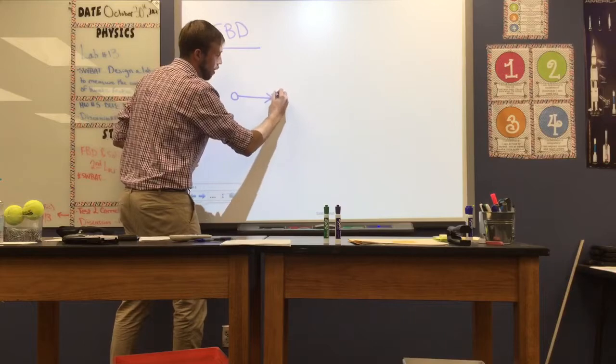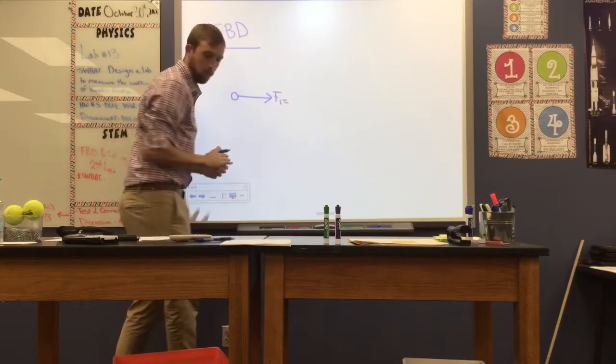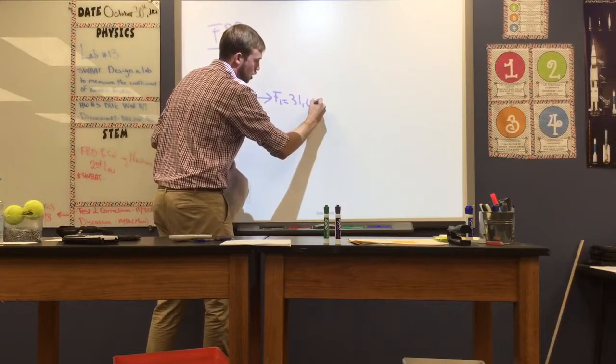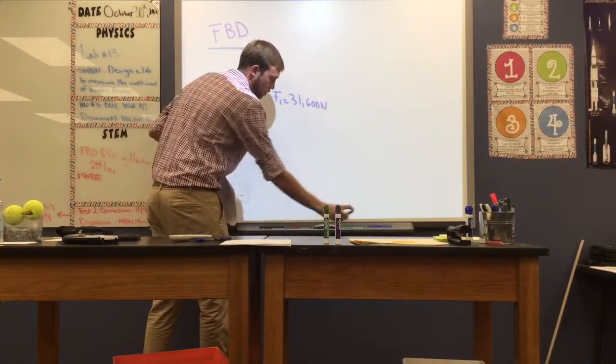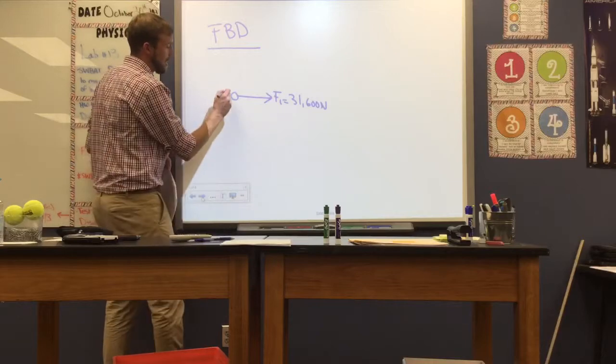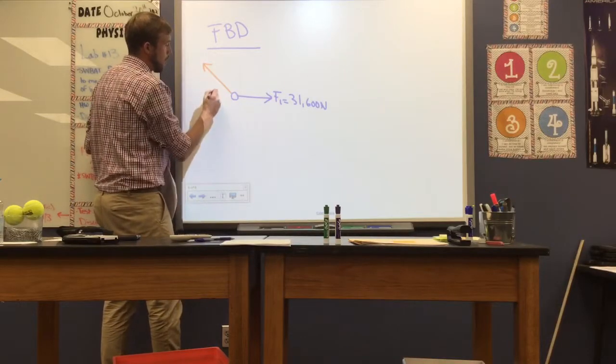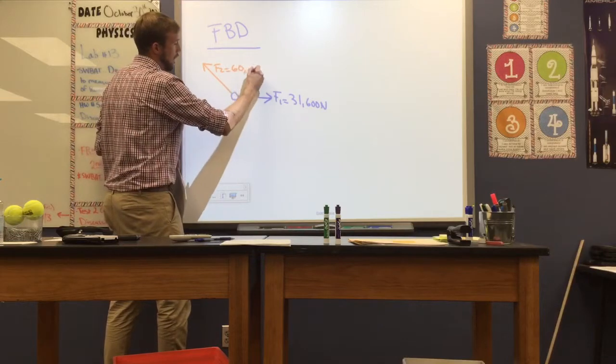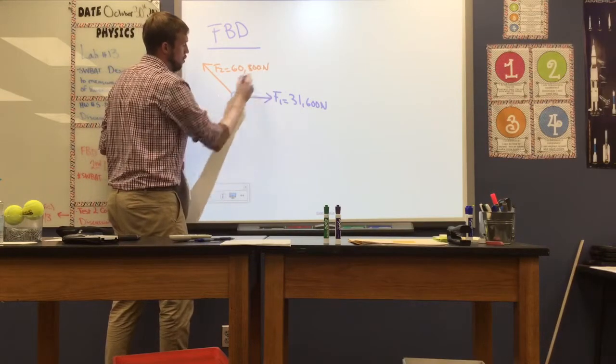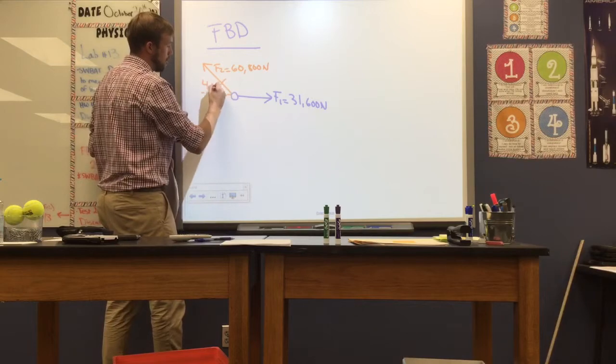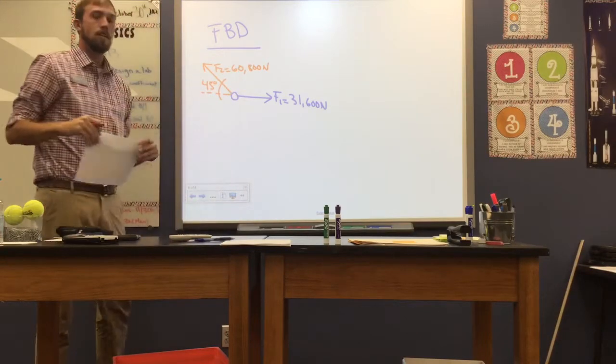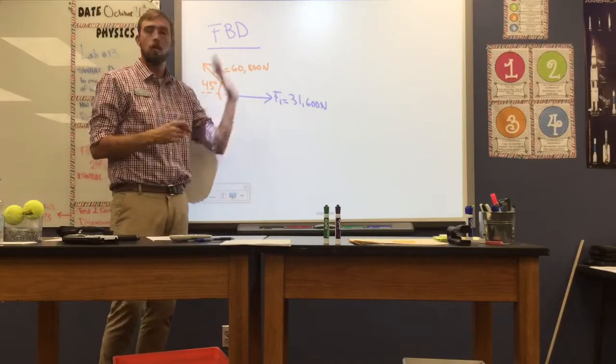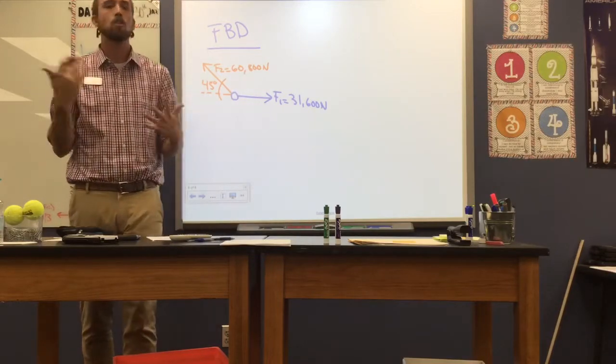And specifically we had a few forces acting on our object. We had one that we called F1 that was out to the east, which had a magnitude of 31,600 newtons. And we had another force that we were told is acting in the northwest direction. We called that F2. It was 60,800 newtons. We were told that an angle of 45 degrees. Now, you'll probably be able to notice there's an imbalance of forces here. And so in the previous problem, we were asked to find how does our boat accelerate?